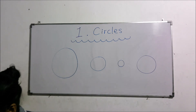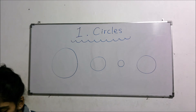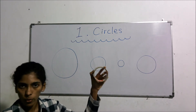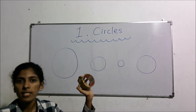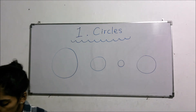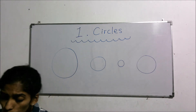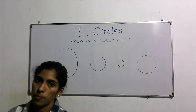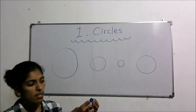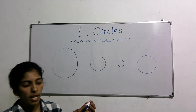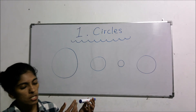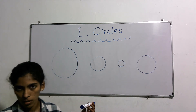Here I have taken a tape also — it also has a circular shape. When we consider so many objects, at the bottom we can also observe a circular shape.